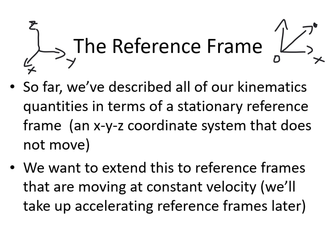We're going to put a constraint: we're only going to allow coordinate systems to move at constant velocity — a uniform speed in a particular direction. We're not going to allow our coordinate system to accelerate. Later in the course we'll look at what happens with accelerated coordinate systems, but for now we'll stick to a coordinate system that has a constant velocity.